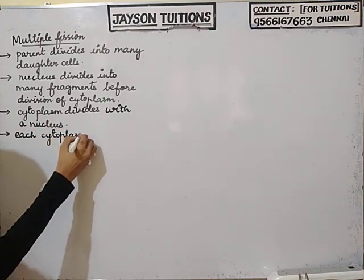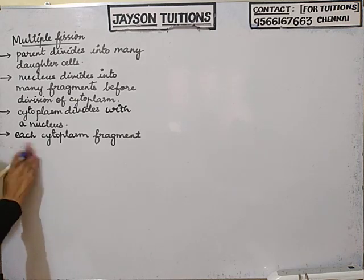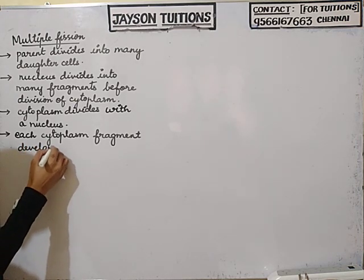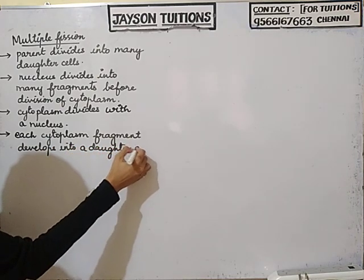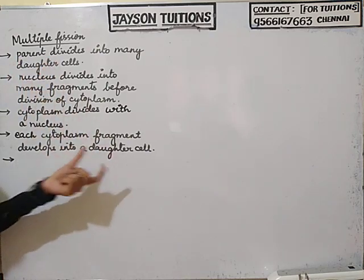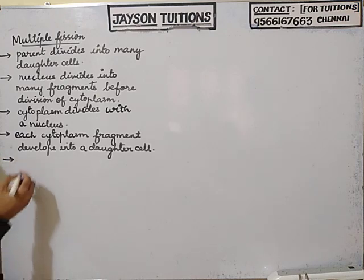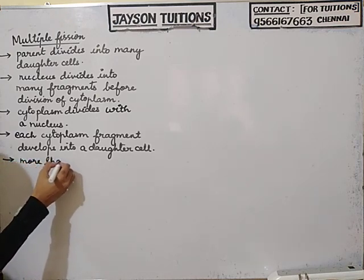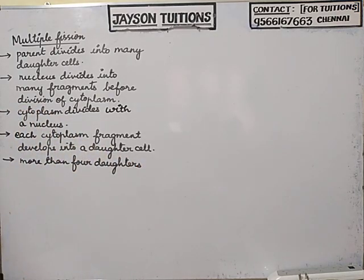Each cytoplasm fragment develops into a daughter cell. So each daughter cell — I have one parent and many organisms. We will get more than four daughters in multiple fission.